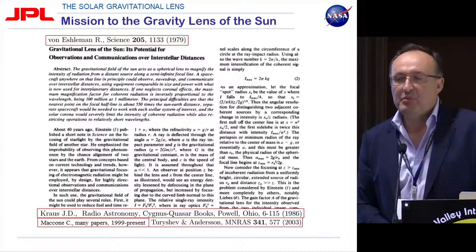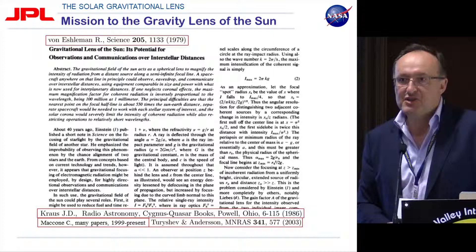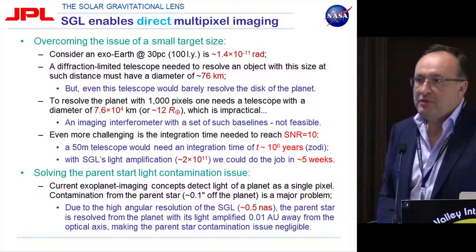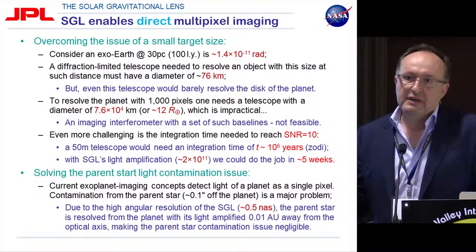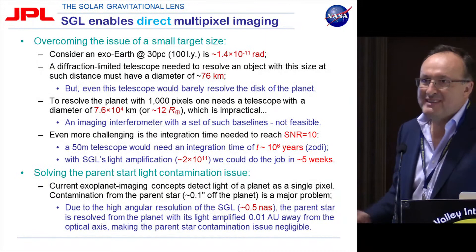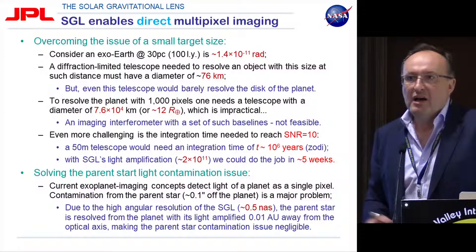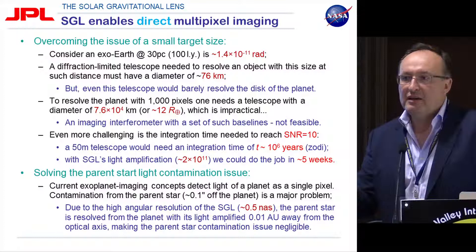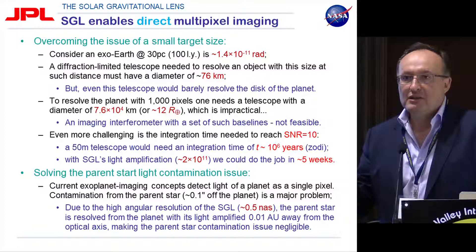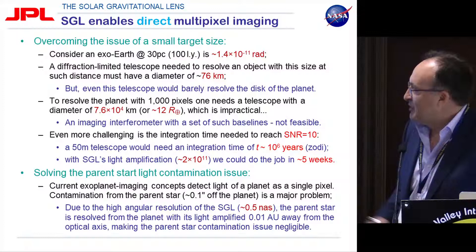We took it a little further and decided that maybe it would be worthwhile to use a solar gravitational lens for imaging of an exoplanet, because imaging is a very difficult task to achieve with conventional technologies. If we take an object roughly 100 light years away — say, Earth — it would be an object of roughly 14 picoradian. To resolve it with a diffraction-limited telescope, you would need a telescope diameter of roughly 76 kilometers in space. Even a mirror a couple atoms thick at that size would weigh a trillion tons, and would be removed from the solar system by solar radiation pressure within one year.